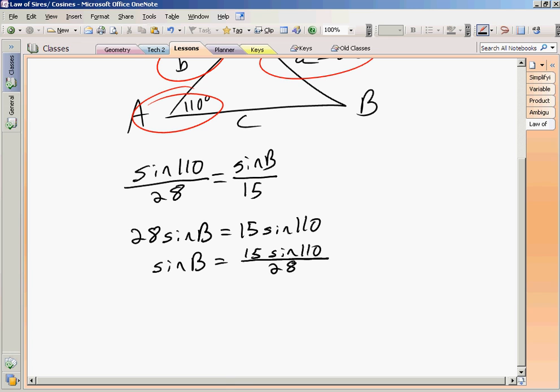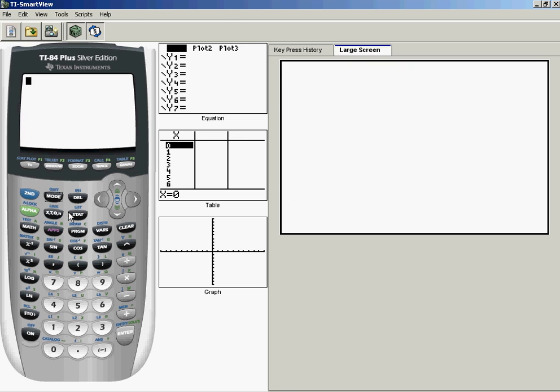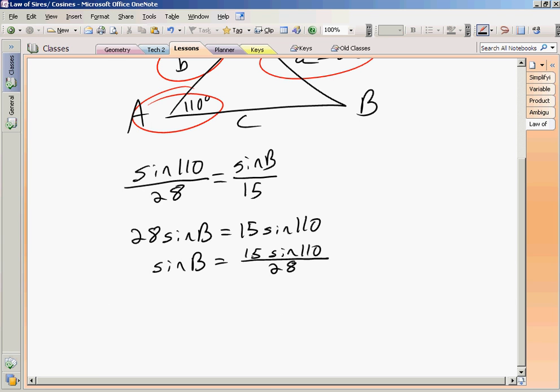So I'll show you how I can put it into the graphing calculator in one step. I know I want the arcsine function. That means I'm putting in a ratio and it's going to give me the angle. If we go back here, I want 15 times sine 110 divided by 28.